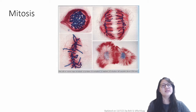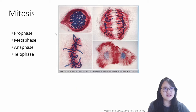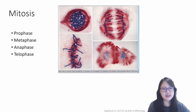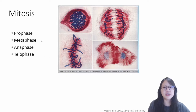Mitosis has four different phases: prophase, metaphase, anaphase, and telophase, and it looks like this under the microscope. This is prophase right here, this is metaphase — looks absolutely crazy and beautiful at the same time. This is anaphase and this is telophase. You will need to know how to describe each and every phase and be able to recognize it under the microscope.